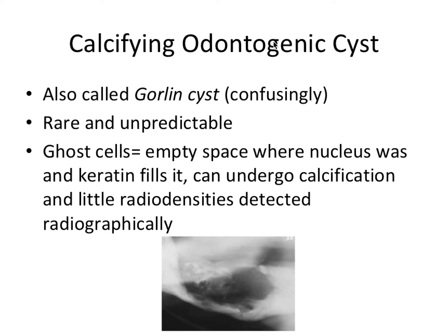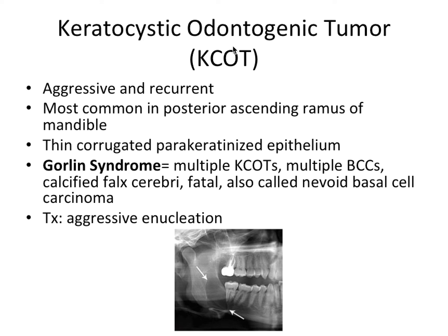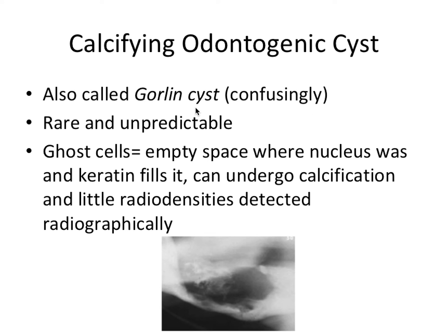Next we have the calcifying odontogenic cyst, also called a Gorlin cyst — confusingly, this is unrelated to Gorlin syndrome with KCOTs. This cyst is rare and unpredictable. Most importantly, it involves ghost cells — empty spaces where the nucleus was, filled with keratin. These cells can undergo calcification, producing tiny radiopaque flecks visible radiographically. This is how you can distinguish a calcifying odontogenic cyst from a KCOT.